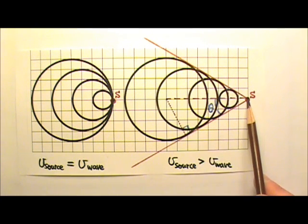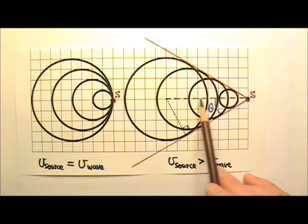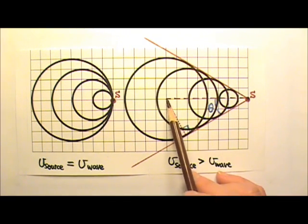This is the distance traveled by the wave source. This is the distance traveled by the wave. So this distance here is the speed of the wave source times time. This distance here is the speed of the wave times time.